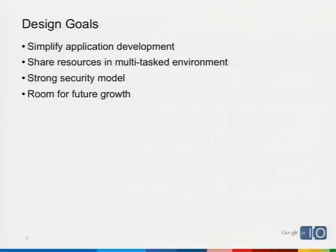Because this is a multitasking operating system, you could potentially have things happening in the background — for example, a music player playing in the background. We need the ability to share resources among all these applications. Another key goal was to design an architecture that could easily share resources. Paramount in Android is the security model — we needed a way to sandbox parts of the application that are particularly vulnerable, isolating parts of the system vulnerable to hacking, while also providing room for future growth and backwards compatibility.